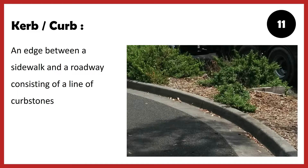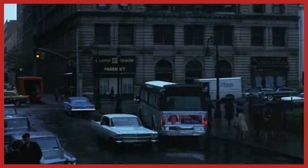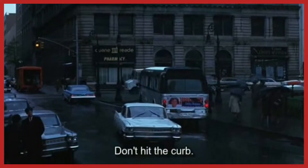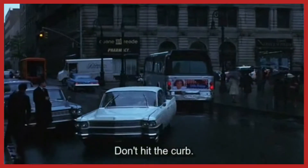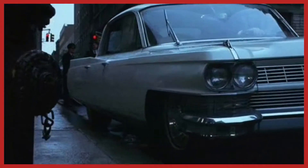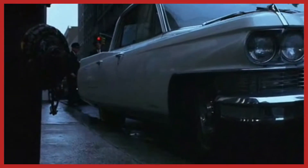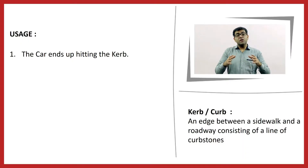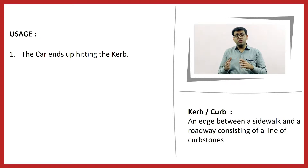A curb with a K or a curb with a C is the edge of the road where pavement meets the road. Let's watch a clipping here. A curb is a line of stones that separate the road from the sidewalk.